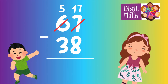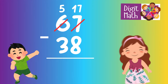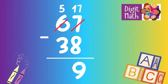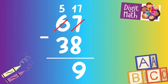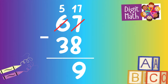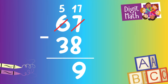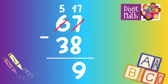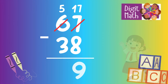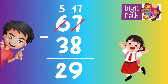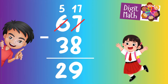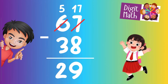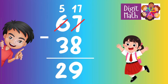Now we have 17 in the Units column. Subtract 8 from 17, which equals 9. In the Tens column, we now have 5. Subtract 3 from 5, which equals 2. So the final result is 67 minus 38 equals 29.